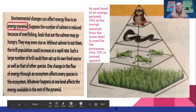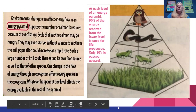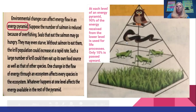At each level of the energy pyramid, 90% of the energy received from the lower level is used for life processes. Only 10% gets passed upward each time.